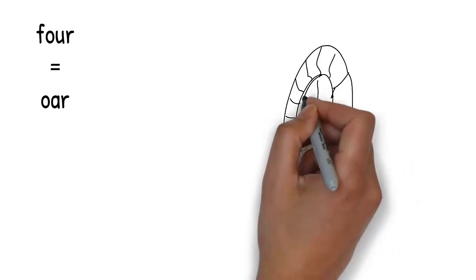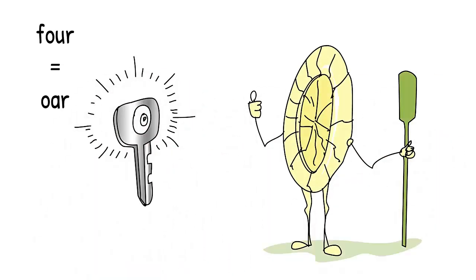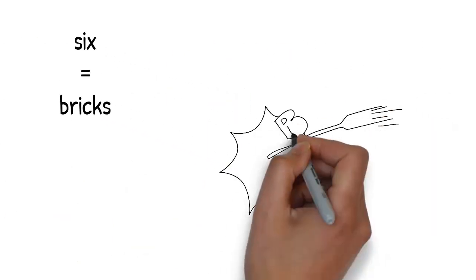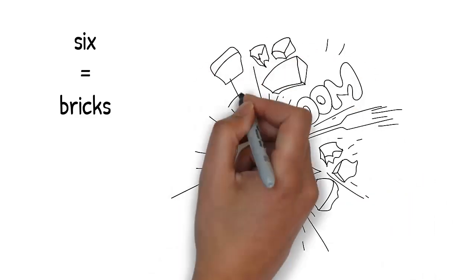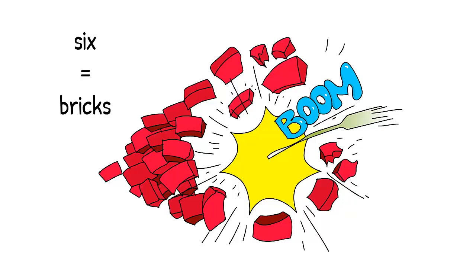Luckily, the plate has some glue and it glues itself back together and then picks up a rowing oar to retaliate. Oar reminds you of four. The plate is a bit grumpy and throws the oar as hard as it can. The oar flies like a spear through the air and into a large pile of red bricks. Bricks rhymes with six.